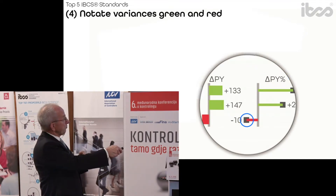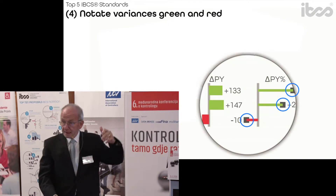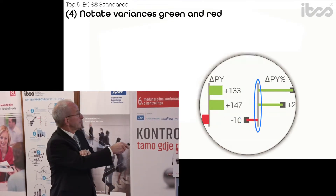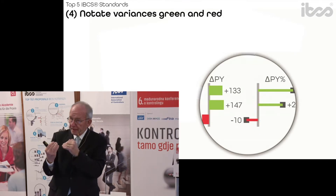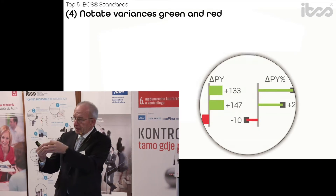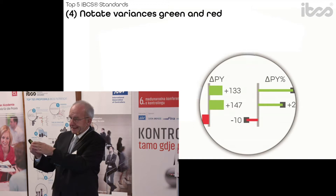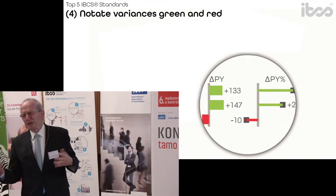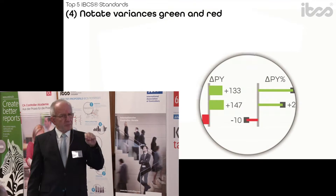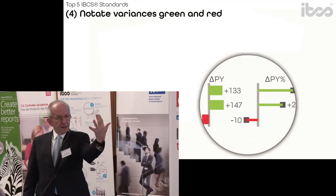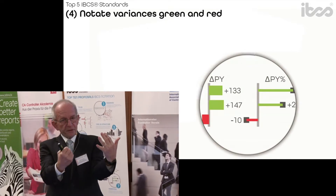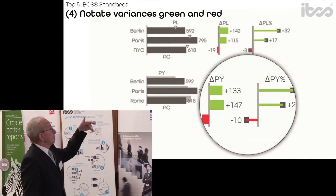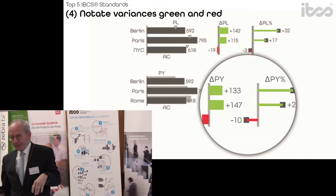This means it is black — that means it's actual versus previous year. So this is a previous year variance in percent. It looks complicated because you need to use it, but it's very practical that you see right away this is actual versus previous year in percent, and these variances look like this.